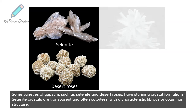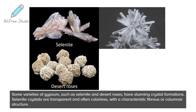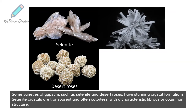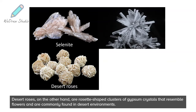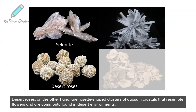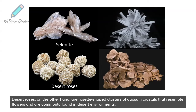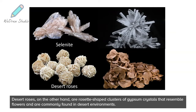Some varieties of gypsum, such as selenite and desert roses, have stunning crystal formations. Selenite crystals are transparent and often colorless, with a characteristic fibrous or columnar structure. Desert roses, on the other hand, are rosette-shaped clusters of gypsum crystals that resemble flowers and are commonly found in desert environments.